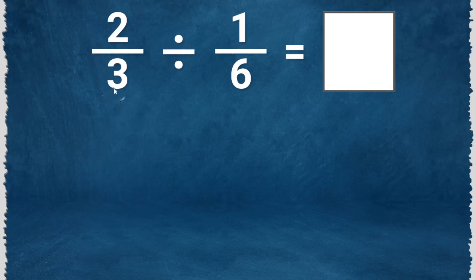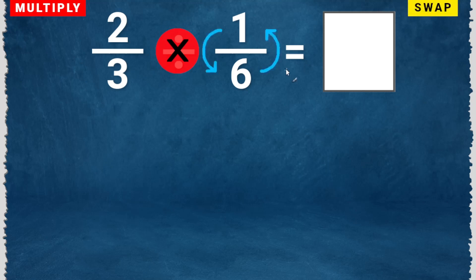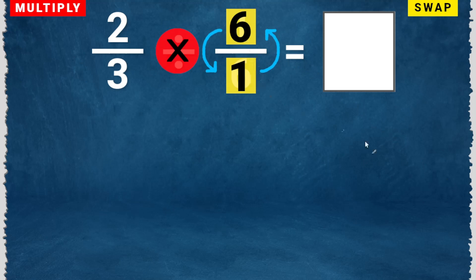2 over 3 divided by 1 over 6. First, multiply — change this to multiply. Then swap the numerator and the denominator of the second fraction. So this will become 6 over 1.